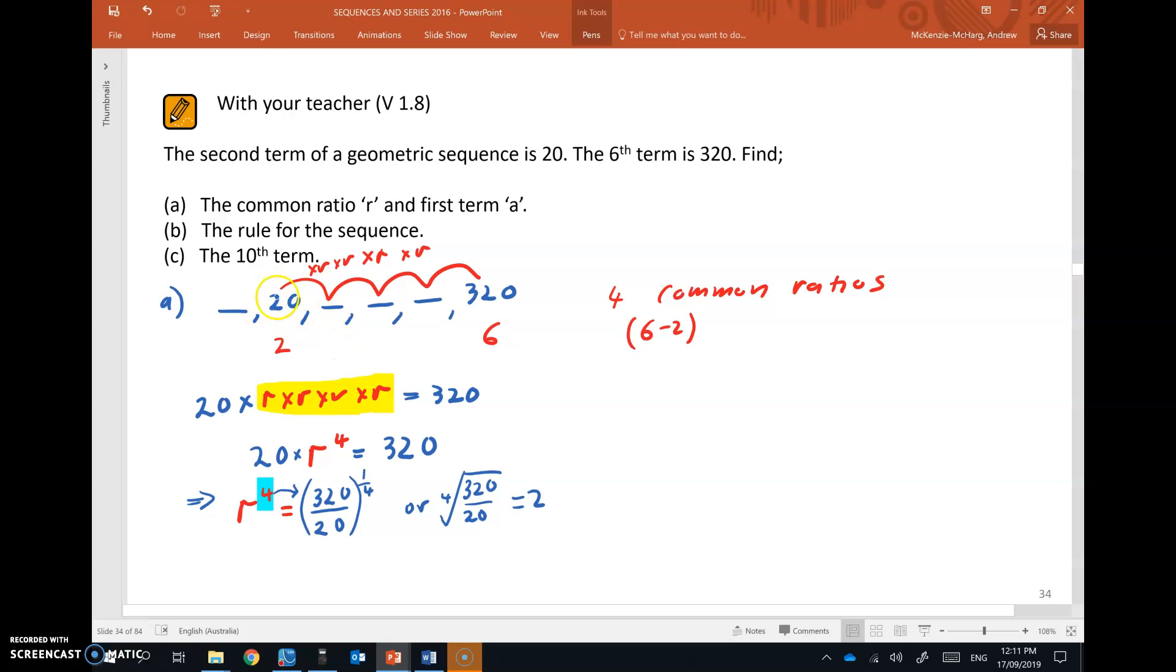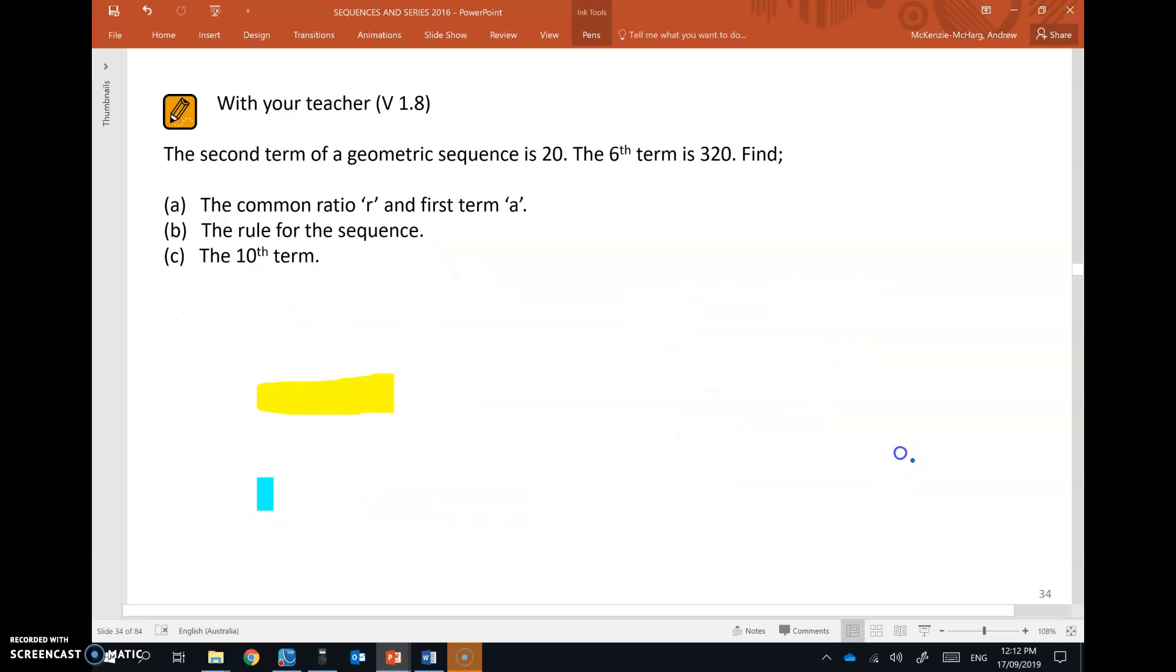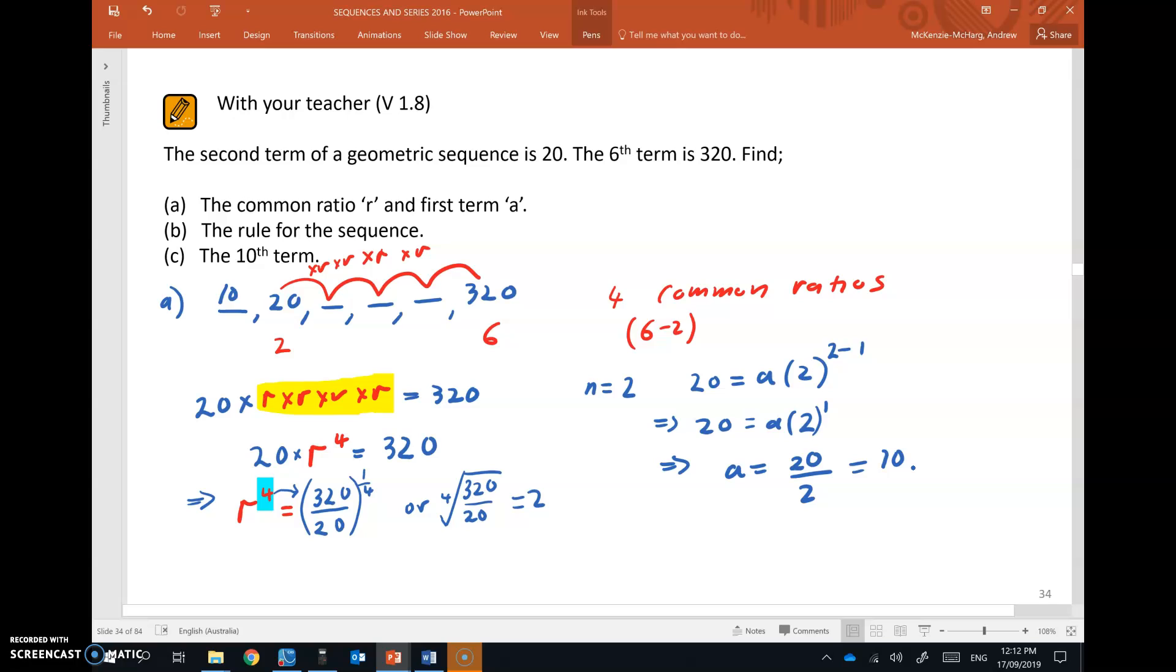Now the first term, just logically counting back, it should be 10, because 10 times 2 is going to give 20 and so forth. But we may need to do this algebraically. So to do that, we're going to say that we know that for n equals 2, the second term is 20. We don't know that first term yet, but we know the common ratio, so we're putting the common ratio and our n value in. So this means 20 equals a by 2 to the power of 1. So rearranging, dividing both sides by that 2 that's multiplying by the a. So 20 over 2 gives 10, and there is that first term, that a value that we were after.